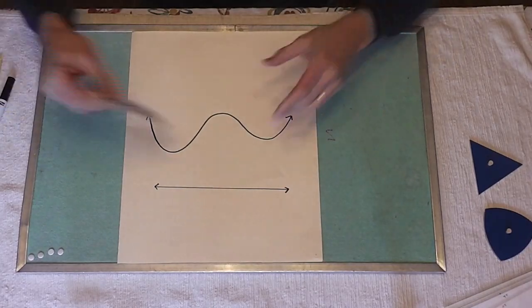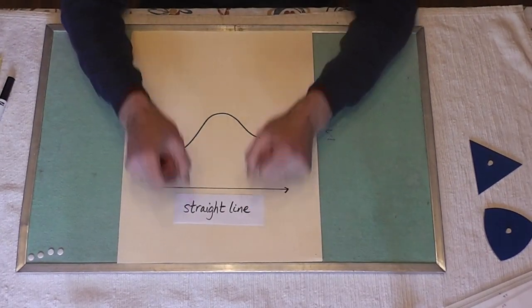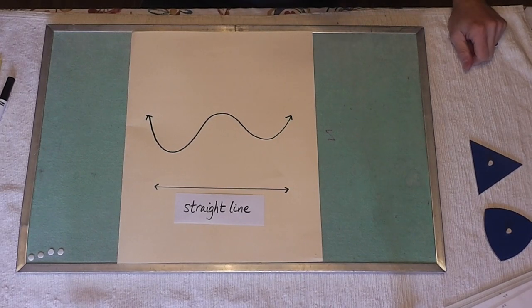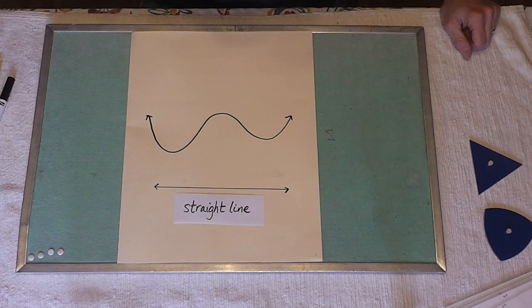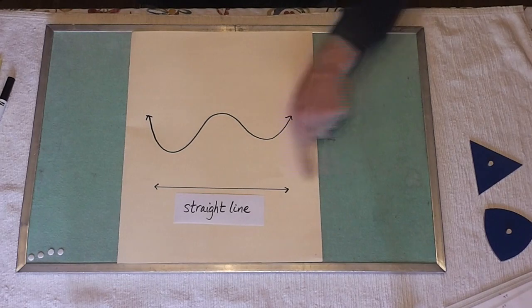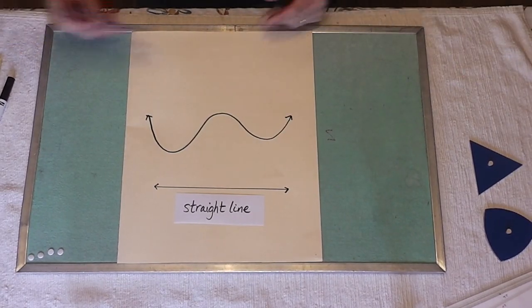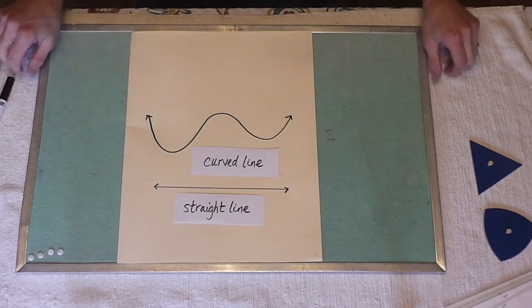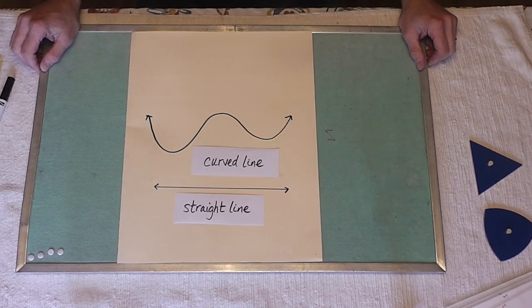So our straight line goes forever but can only go in two different directions. It never changes its direction. It always goes—let's call it left to right, east to west, north to south. Our curved line always changes directions.